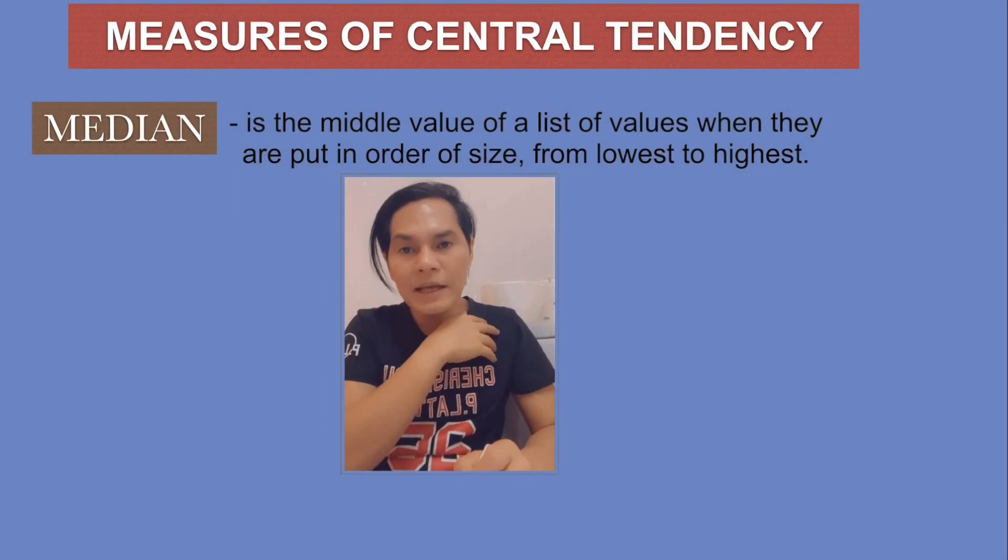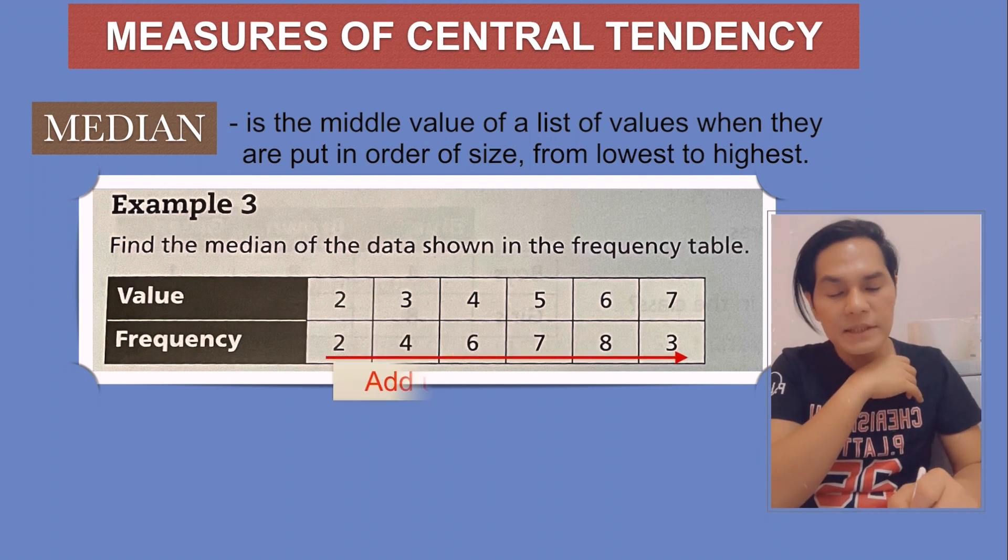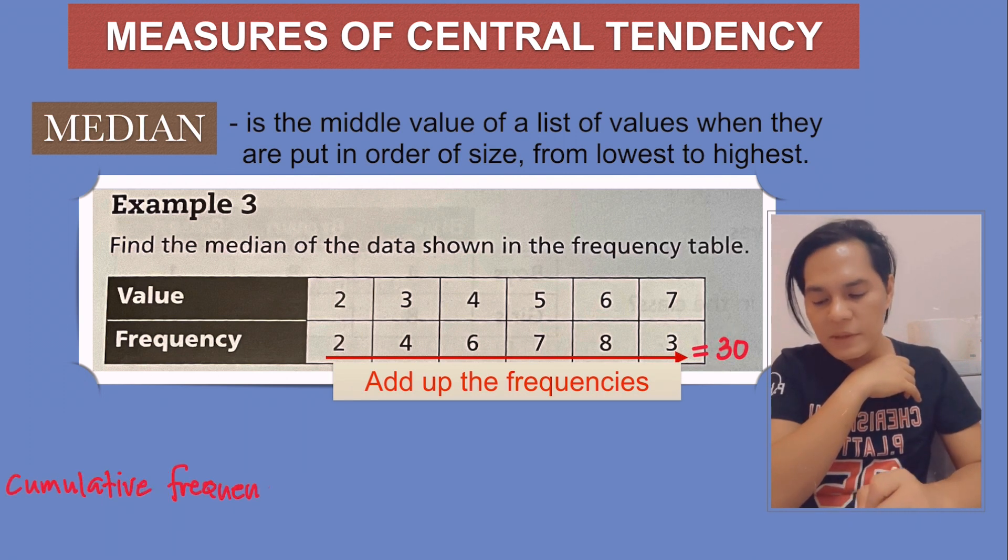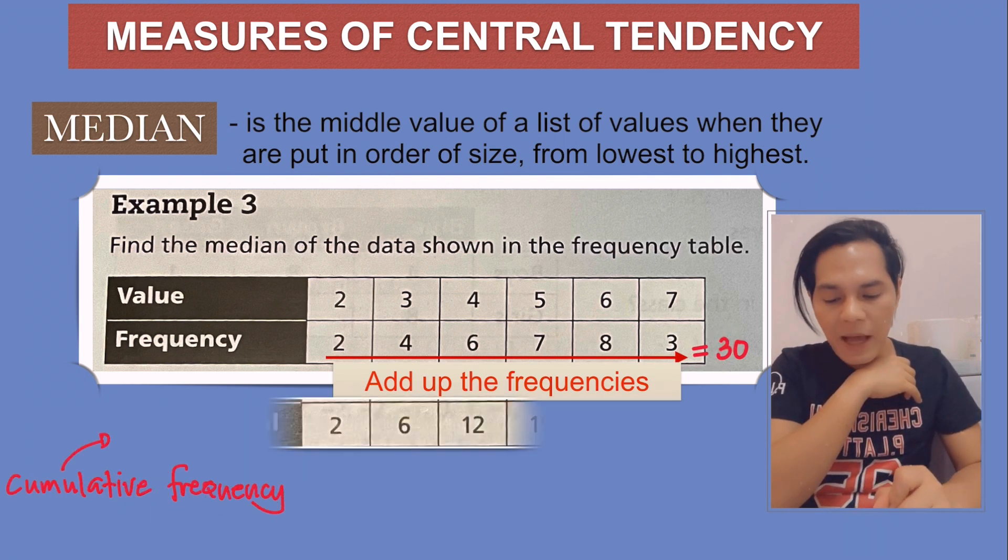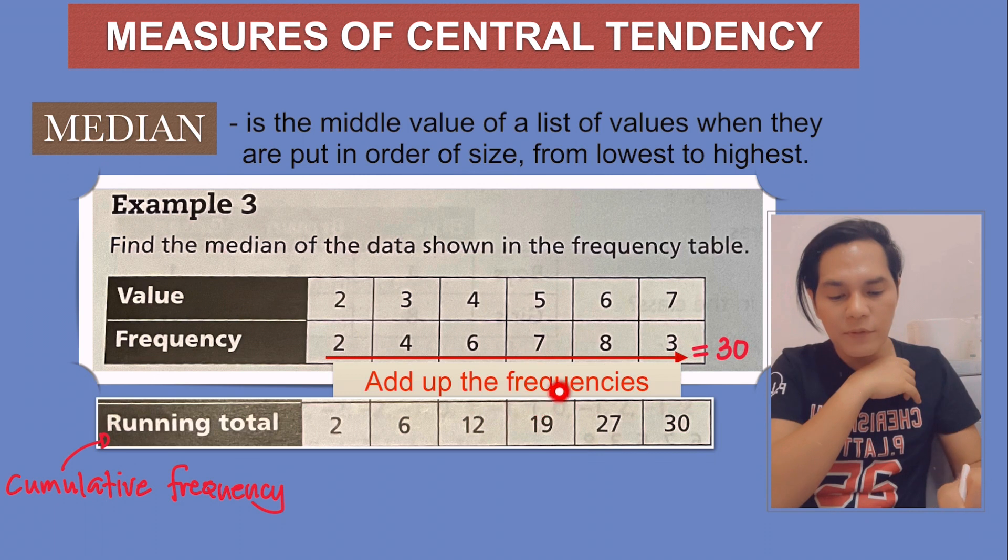I have here another example in finding the median. Find the median of the data shown in the frequency table. First, add up the frequencies, and the total here equals 30. Next, look for the cumulative frequency, meaning the running total. Just simply copy 2 from the frequency and put it in the running total, then add up: 2 plus 4 equals 6, 6 plus 6 equals 12, and so on. That's why we have 30 here.